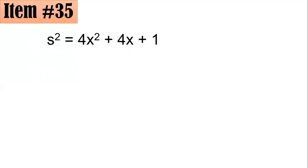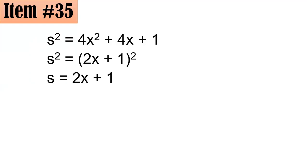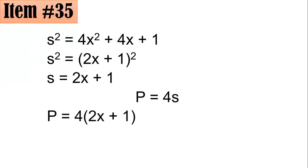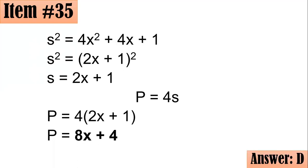The right-hand side is in fact the square of (2x plus 1). Taking the principal square root of both sides, s equals 2x plus 1. Now the perimeter is 4 times s, so 4 times (2x plus 1). By the distributive property, that gives 8x plus 4 units. D is the correct answer.